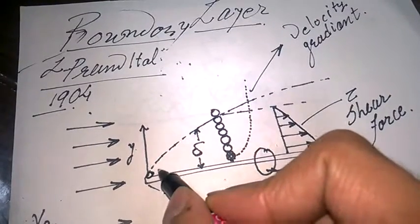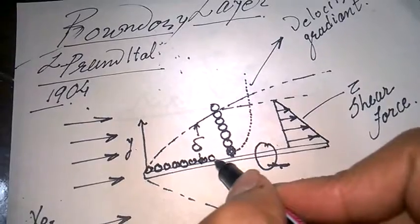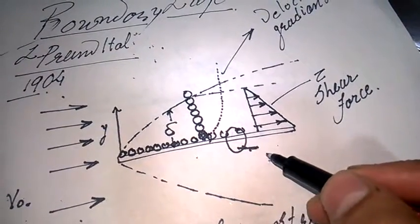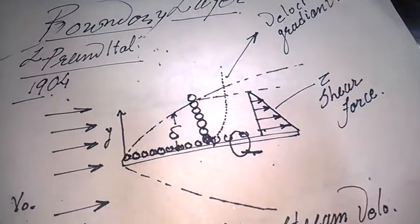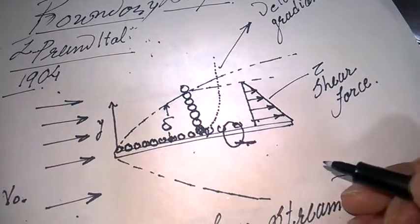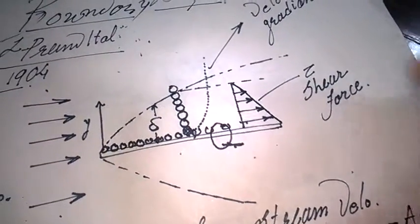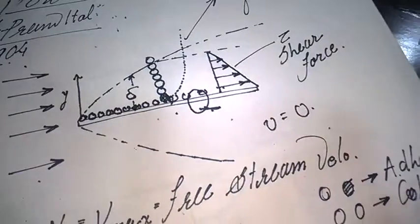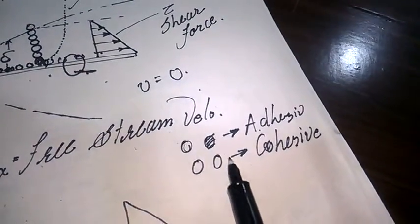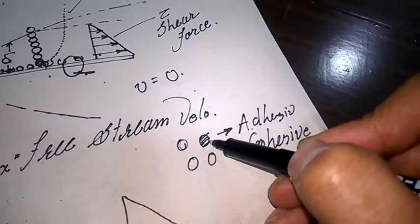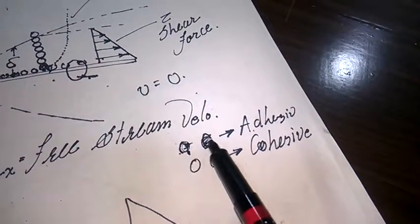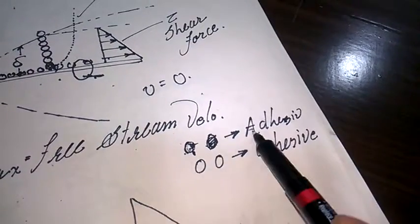All particles very near to the surface have zero velocity because they get trapped in between the hills and valleys, as mentioned earlier. Also, the atoms of the plate and the atoms of the fluid attract each other with a cohesive force, so the fluid gets stuck to the surface.